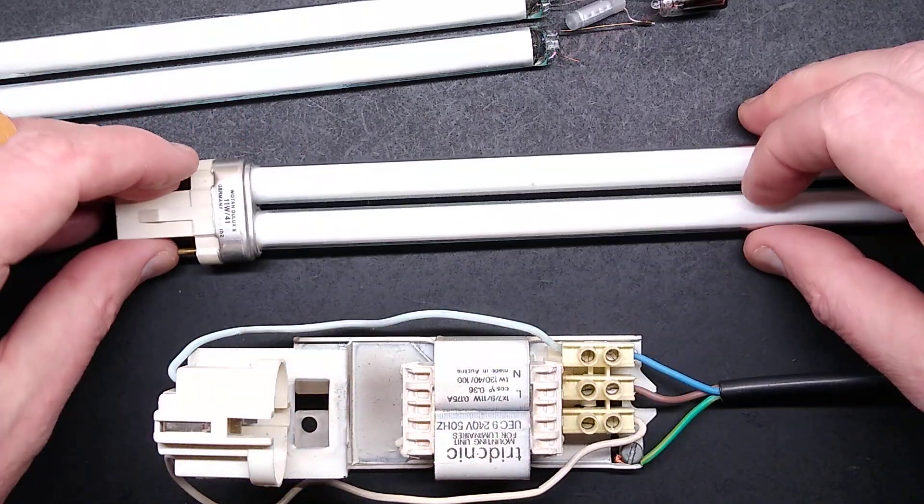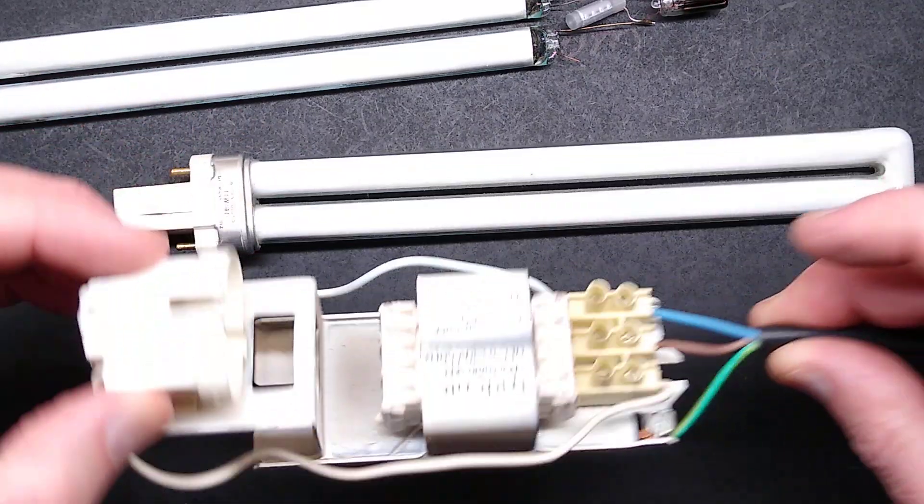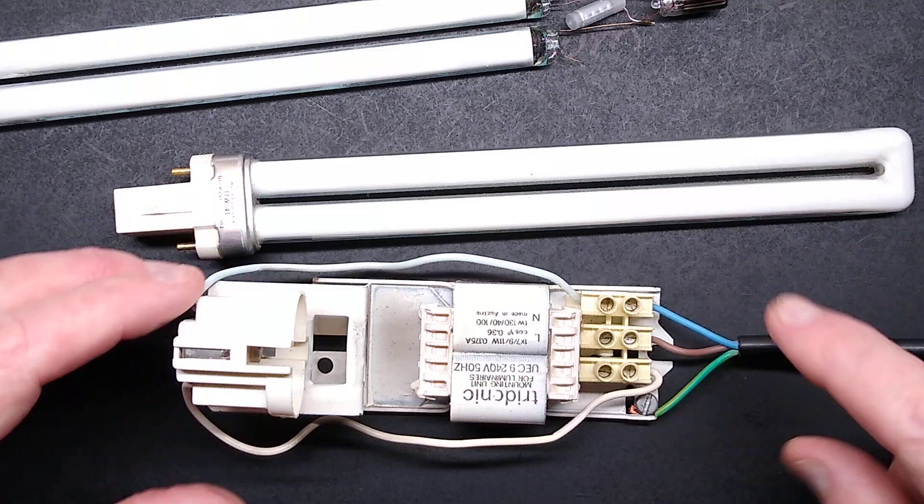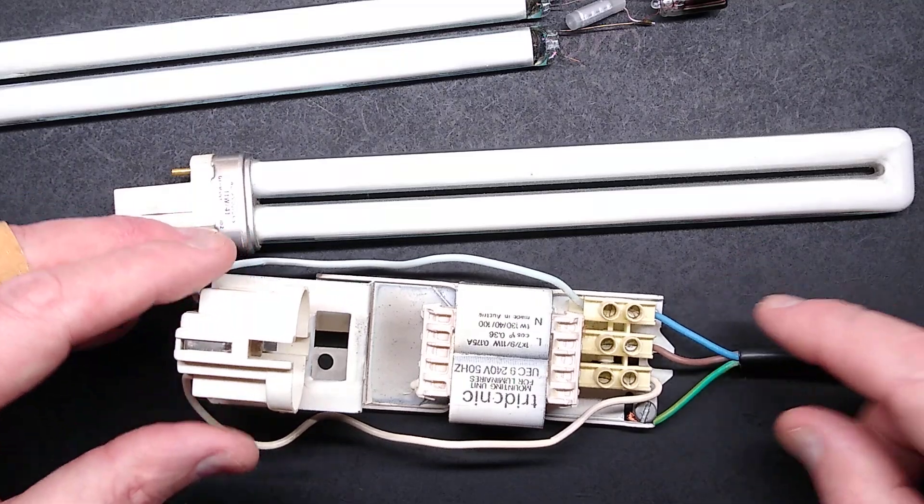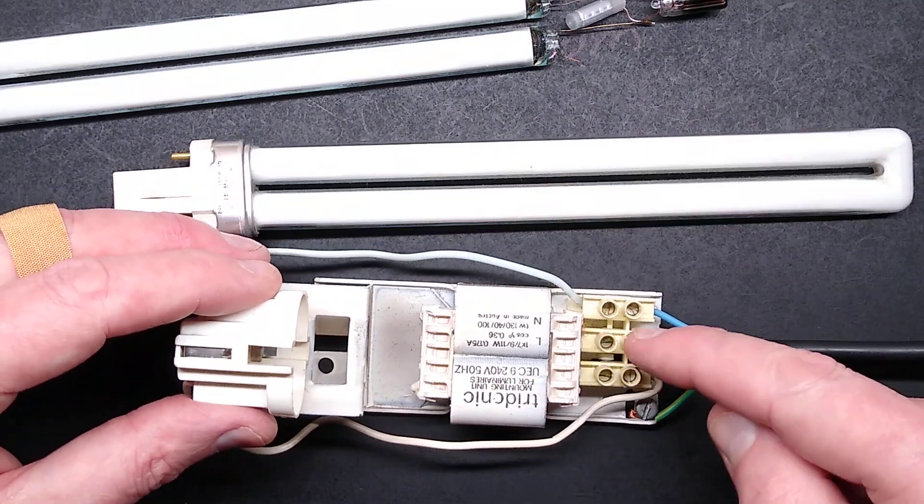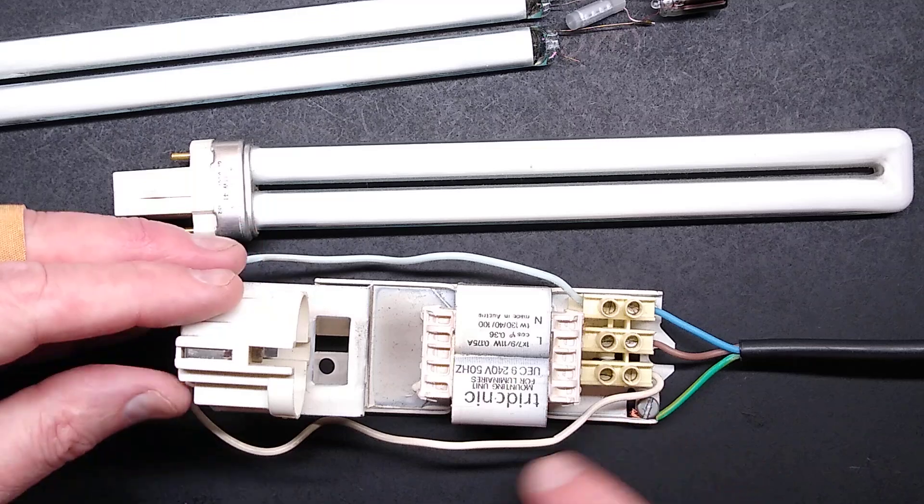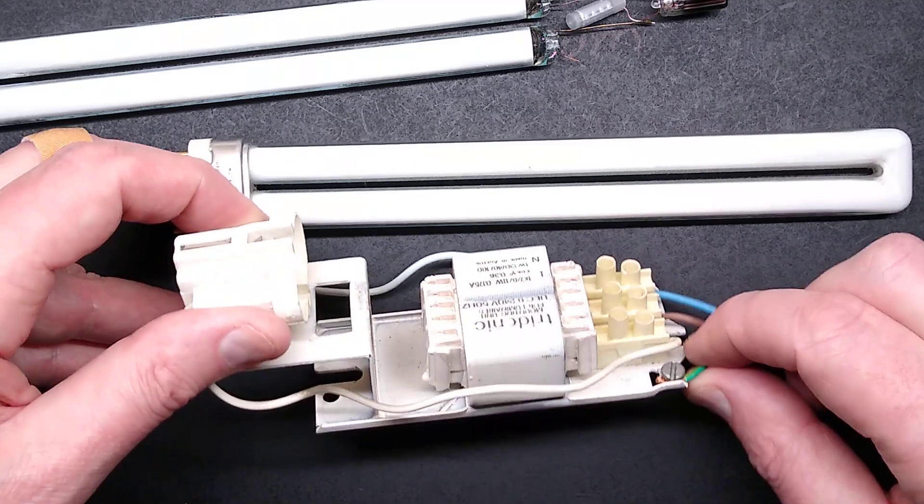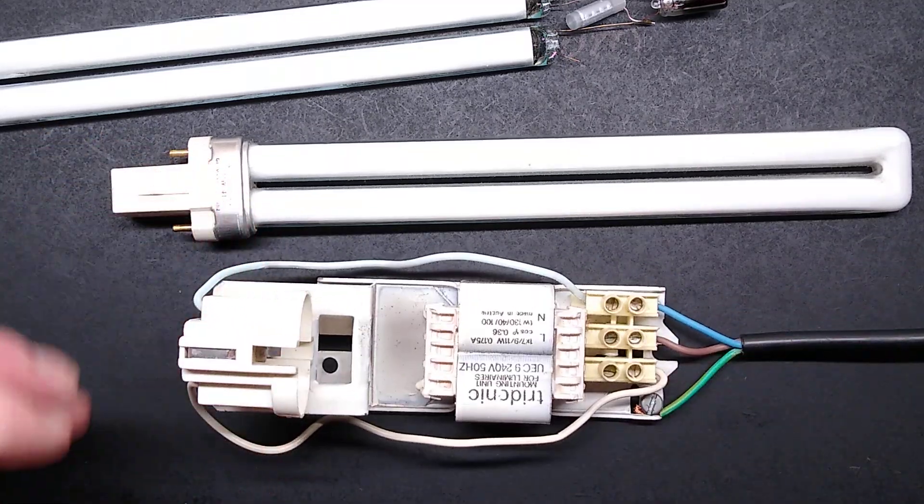This is the lamp with the starter built in, and this is just a simple inductor. It's got live, neutral, and earth. The neutral goes straight to the lamp, the live goes through the inductor and comes back out to the other end of the lamp, and the earth just goes onto the chassis.